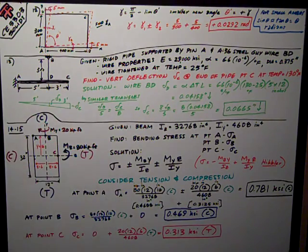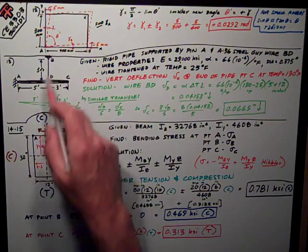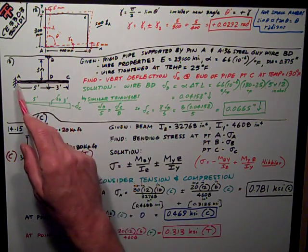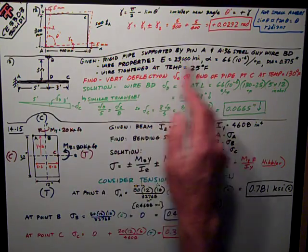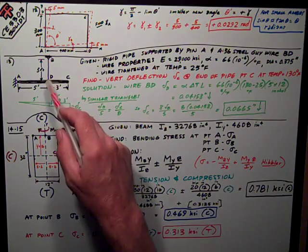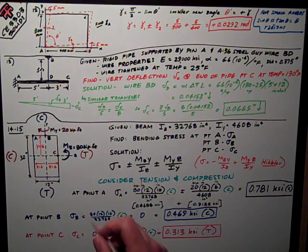Number 13 was a thermal stress, thermal temperature change problem. We were given that we had a rigid pipe ADC supported by a pin at A and an A36 steel guy wire BD, which in this case was 5 feet long.